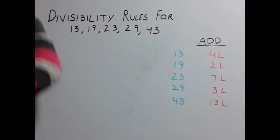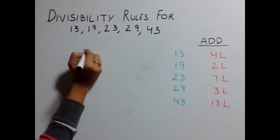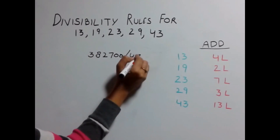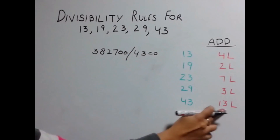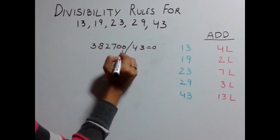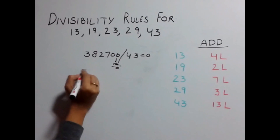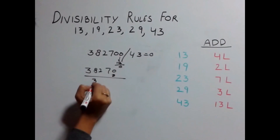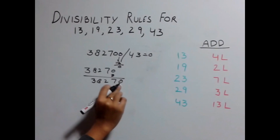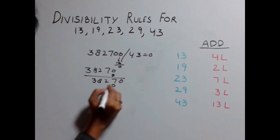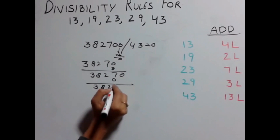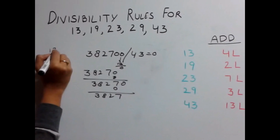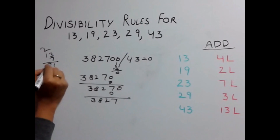Let's check one more example: is 382700 divisible by 43? For 43, multiply the last digit by 13. First, 13 × 0 = 0; adding to the remaining number 38270 gives 38270. Again, multiply the last digit 0 by 13, giving 0; adding to 3827 gives 3827. Next, multiply last digit 7 by 13: 7 × 13 = 91. Adding 91 to the remaining number 382 gives 473.